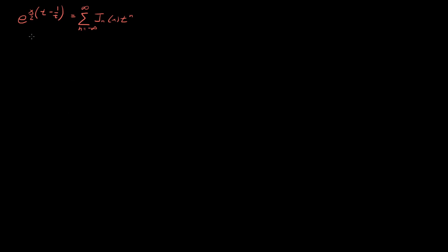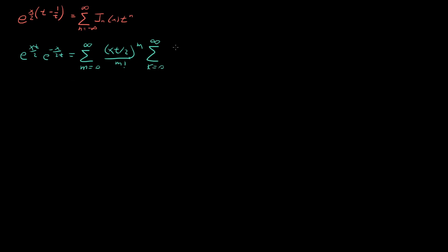The first step is to break this into two exponentials: e to the x*t over 2, times e to the minus x over 2t. Then we can write this using Taylor's theorem as two sums — one from m equals 0 to infinity of (x*t/2)^m over m factorial, multiplied by the sum from k equals 0 to infinity of (minus x over 2t)^k over k factorial.